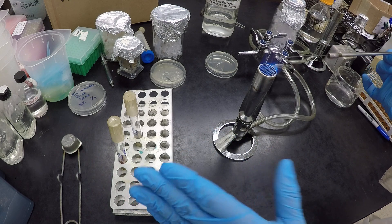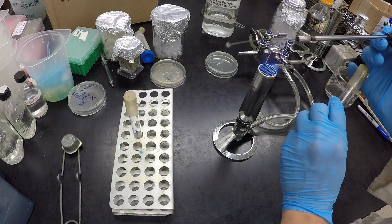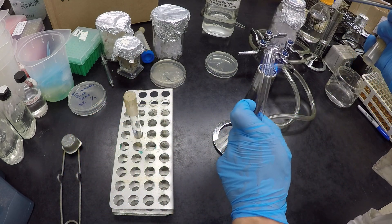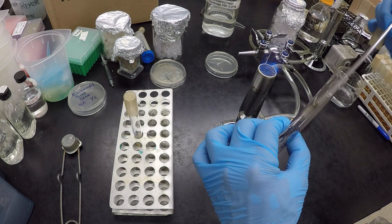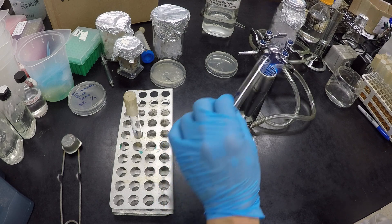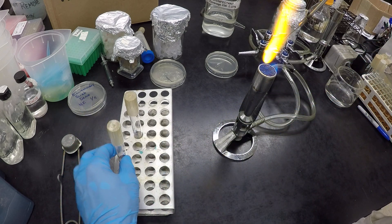And now I'm going to grab my sterile broth, my sterile TSB. Again, grip it with the pinky, twist and turn, flame, insert, a little bit of a shake, flame, close, sterilize, put away.